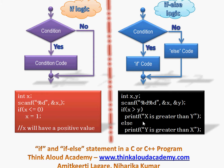For if-else, we have code that tries to find the greater of two numbers. We ask the user to enter values of x and y, and we check if x is greater than y — if so, we say x is greater than y; else we say y is greater than x. If the condition gets satisfied, the if block executes; otherwise, we branch into the else part.